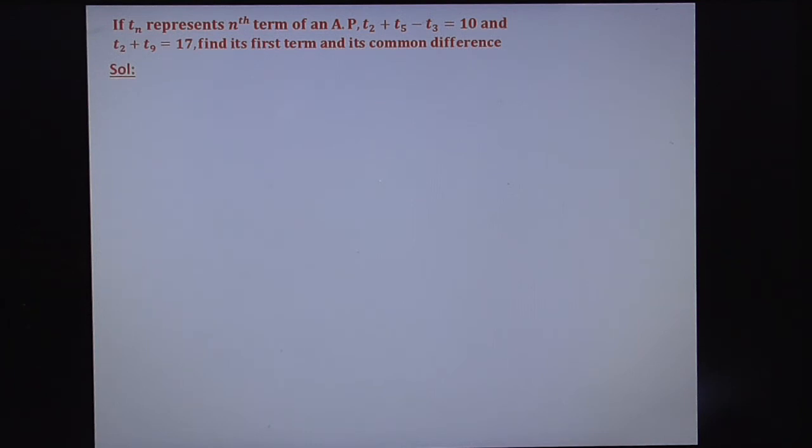So first, let the first term of AP series be A and common difference be D. That is your assumption. You know that the first term is always represented by A. For AP, common difference is represented by small d.